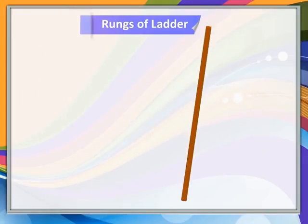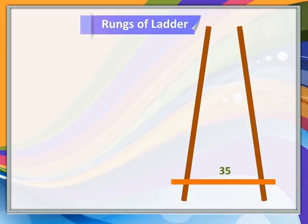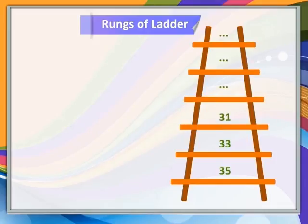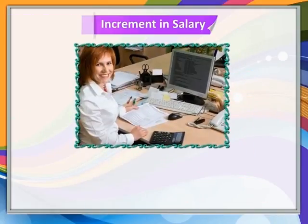In the given ladder, the length of the rungs decreases uniformly by two centimeters from bottom to top. The lengths of the rungs from bottom to top are 35 centimeters, 33 centimeters, 31 centimeters, and so on.